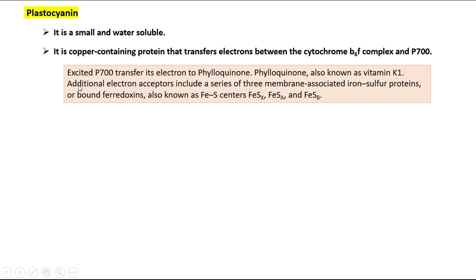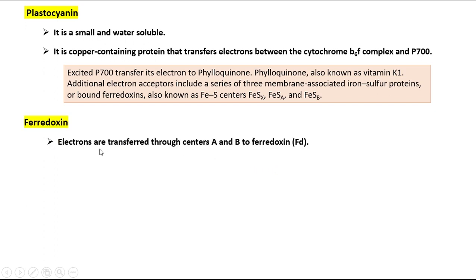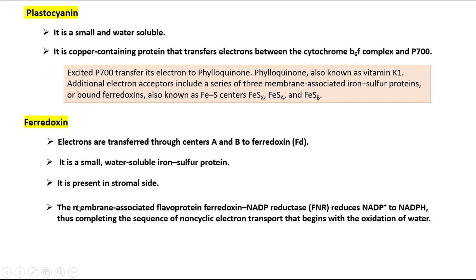Additional electron acceptors include a series of three membrane-associated iron-sulfur proteins, or bound ferredoxins, known as FeSX, FeSA, and FeSB. Electrons are transferred through centers A and B to ferredoxin, a small, water-soluble iron-sulfur protein present on the stromal side. The membrane-associated flavoprotein ferredoxin-NADP reductase (FNR) reduces NADP to NADPH, completing the sequence of non-cyclic electron transport that begins with the oxidation of water.